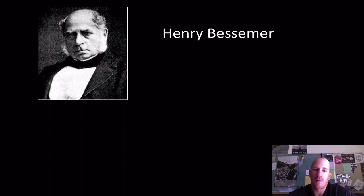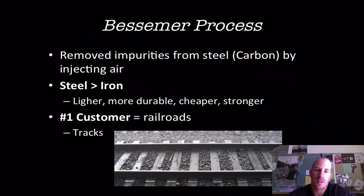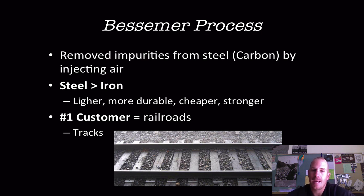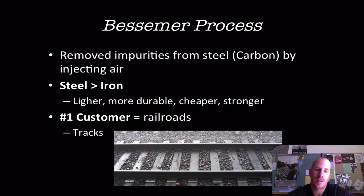Henry Bessemer is the father of modern steel creation. In 1850, Bessemer developed a process to remove impurities — basically carbon — from steel by injecting air through it. By 1880, about 90% of the steel industry was creating steel this way. Steel is greater than iron: it's much stronger, lighter, cheaper to make, and far more durable. Iron is very dense, brittle, and rusts much quicker. The number one customer for steel is railroads — they need it for tracks — and this greatly expanded the ability of railroad companies to lay track much more quickly and cheaply.